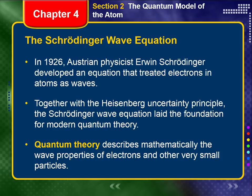So on to the Schrödinger wave equation. In 1926, the Austrian physicist Erwin Schrödinger developed an equation that treated electrons in atoms as waves. Schrödinger was the first one who actually created a mathematical equation to determine the frequency of electrons. You don't actually have to do anything with the actual equation. You just need to know that together with the Heisenberg uncertainty principle, the Schrödinger wave equation laid the foundation for modern quantum theory.